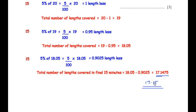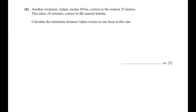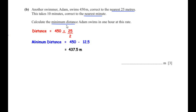Another swimmer Adam swims 450 meters correct to the nearest 25 meters, and this takes 10 minutes correct to the nearest minute. We need to find the minimum distance Adam swims in one hour at this rate, using upper and lower bounds. The lower bound of distance is 450 minus 25 over 2, giving a minimum distance of 437.5 meters.